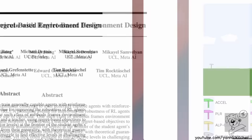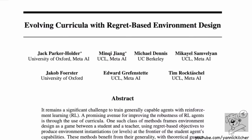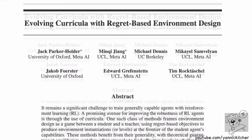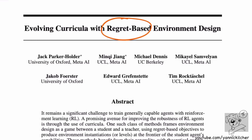The paper we're going to look at is called 'Evolving Curricula with Regret-Based Environment Design' by Jack Parker-Holder and Minqi Jiang and others, mainly by Meta AI, with collaborations from UCL, UC Berkeley, and University of Oxford. This paper combines recent developments in regret-based algorithms that go about making a curriculum and evolution, which is another way that people approach this.